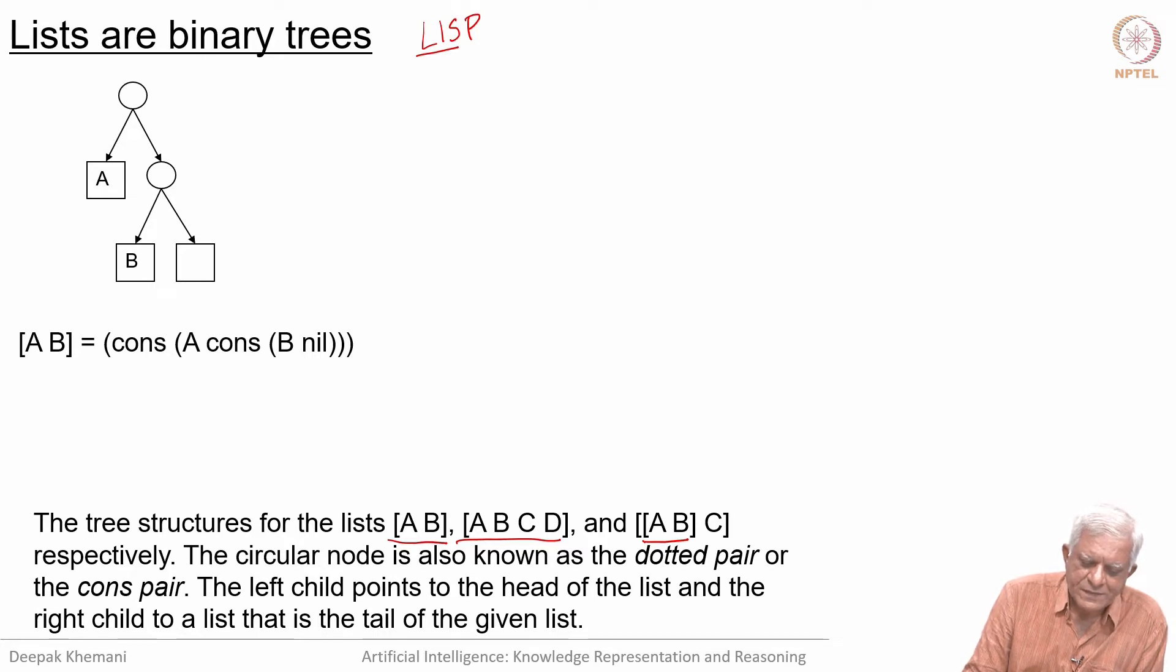The circle represents what is called a dotted pair or a cons pair. This word cons comes from the language LISP. It is a basic operator in LISP. When we say cons something with something, it basically says take a list and add a new element at the head of the list. The left child points to the head of the list and the right child points to the rest of the list or tail of the list.